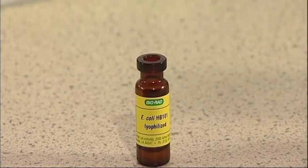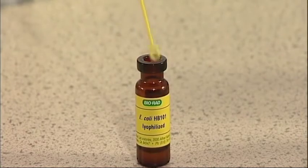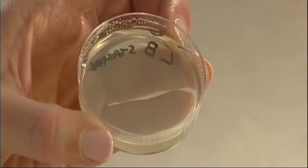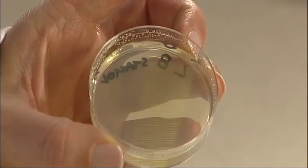To streak the starter plates, take a fresh inoculation loop and dip it into the rehydrated E. coli. Run the inoculation loop over the first quarter of the starter plate.